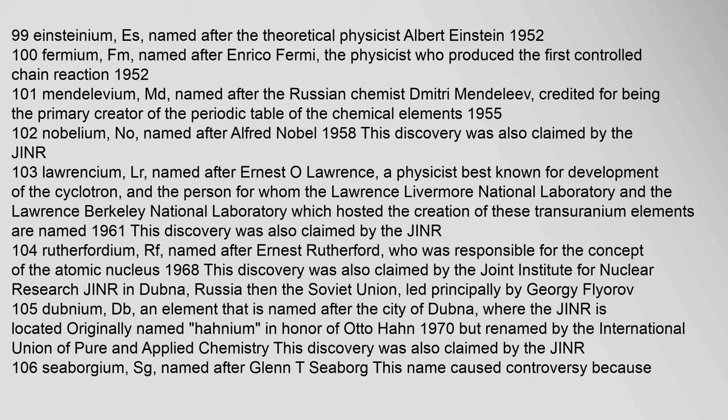Element 102, Nobelium (No), named after Alfred Nobel, 1958 — this discovery was also claimed by the JINR. Element 103, Lawrencium (Lr), named after Ernest O. Lawrence, a physicist best known for development of the cyclotron and the person for whom the Lawrence Livermore National Laboratory and Lawrence Berkeley National Laboratory are named, 1961 — also claimed by the JINR. Element 104, Rutherfordium (Rf), named after Ernest Rutherford, who was responsible for the concept of the atomic nucleus, 1968 — also claimed by the JINR.